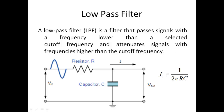One by one we'll be talking about these filters. In this particular video we are going to talk about the low-pass filter. A low-pass filter is a filter that passes signals with a frequency lower than a selected cutoff frequency and attenuates signals with frequencies higher than the cutoff frequency. When you apply an input to a low-pass filter with a cutoff frequency fc set at, say, 2 kHz, it will allow all signals having frequency below 2 kHz to pass through.